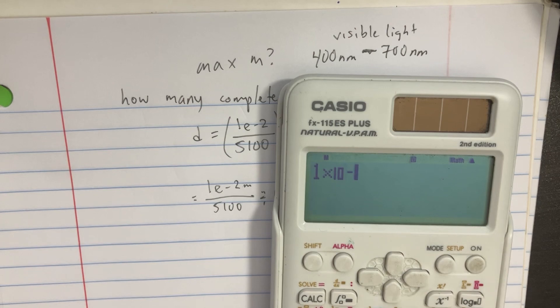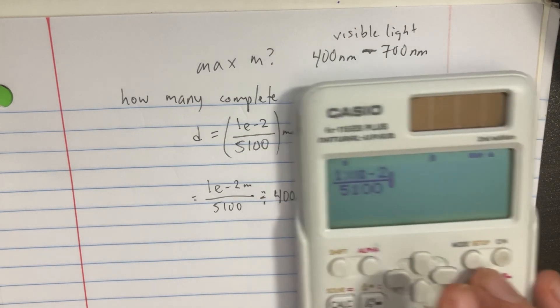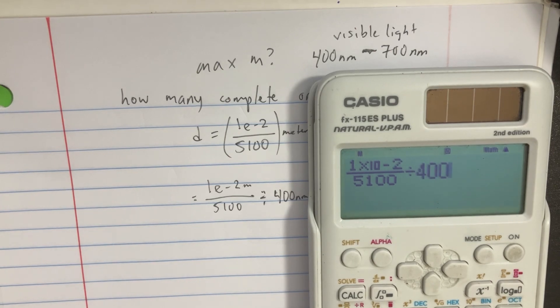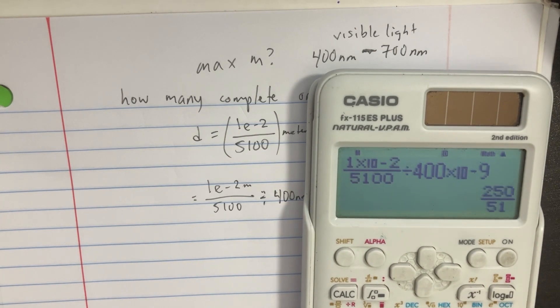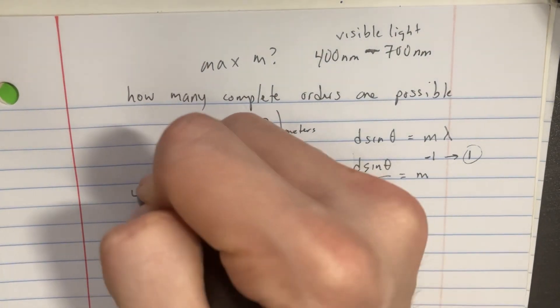So we get one E to the negative two divided by five one zero zero. And then we're going to divide that by four hundred nanometers. Now we get this number four point nine.